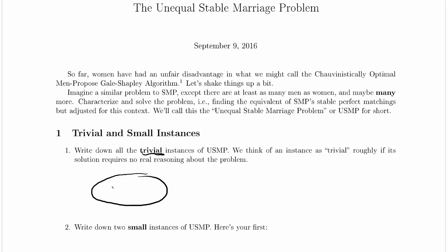Is that still trivial? I'm going to modify the existing example — putting men on this side and women on that side. Is it still trivial now that we've got one man? Yes, it's still trivial; there are no women, so no one's going to end up married. In fact, it doesn't matter how many men we have — any number you like. If there's no women, this is a trivial instance; the solution has to be that no one is married to anyone else. So this is actually an infinite number of trivial instances: all instances with no women and an arbitrary number of men, including 0.